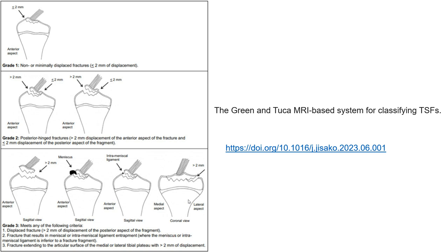Classification — the Meyers and McKeever system for tibial spine fractures: Grade 1 is a non-displaced or minimally displaced fracture, with displacement less than 2 mm. Grade 2 is a beak-type fracture with displacement more than 2 mm of the anterior aspect of the fracture and less than 2 mm of the posterior aspect of the fragment.